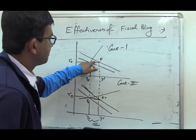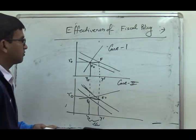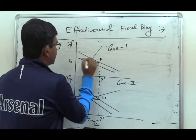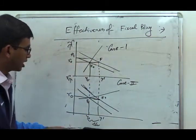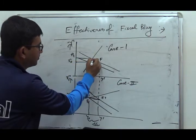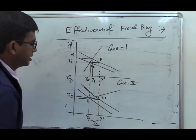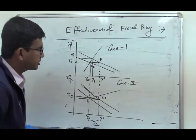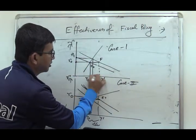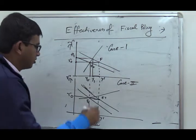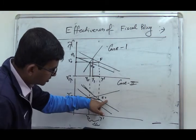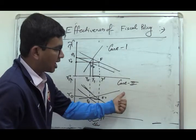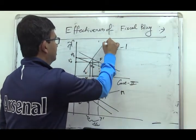There is a high increase in rate of interest in Case 1, leading to a high volume of crowding out. In Case 2, the LM curve is flatter, meaning speculative demand for money is highly sensitive to the rate of interest. Therefore, just a small increase in rate of interest is sufficient to restore money market equilibrium — from R0 to R1 dash — and output increases from Y0 to Y1 dash, which is a larger increase than in Case 1.